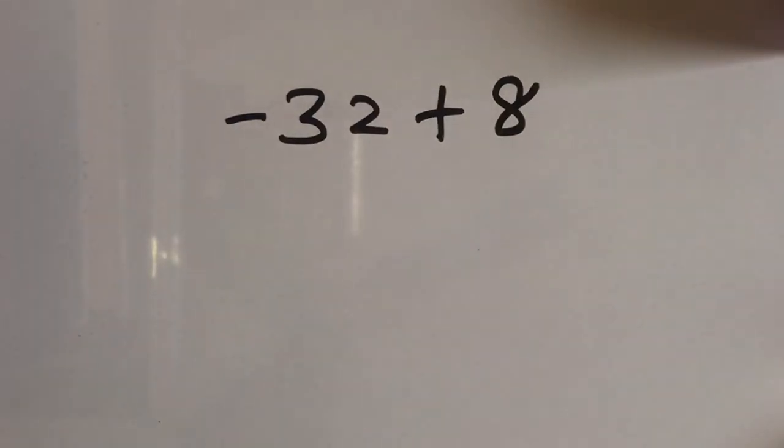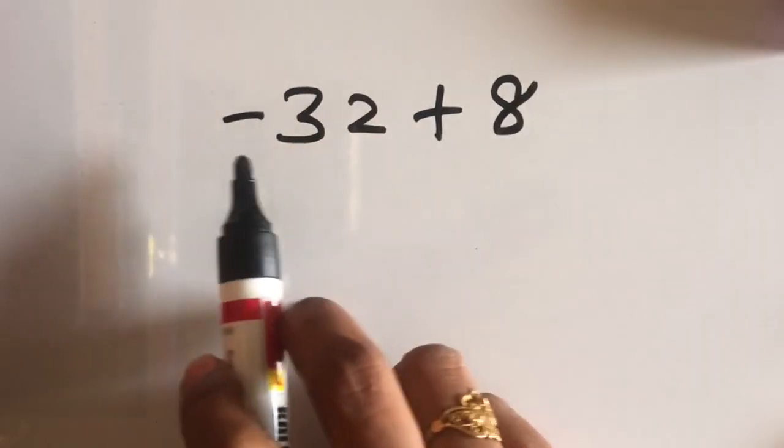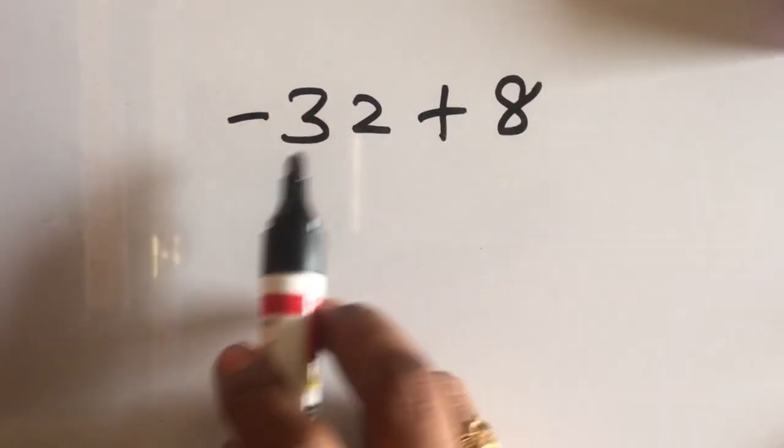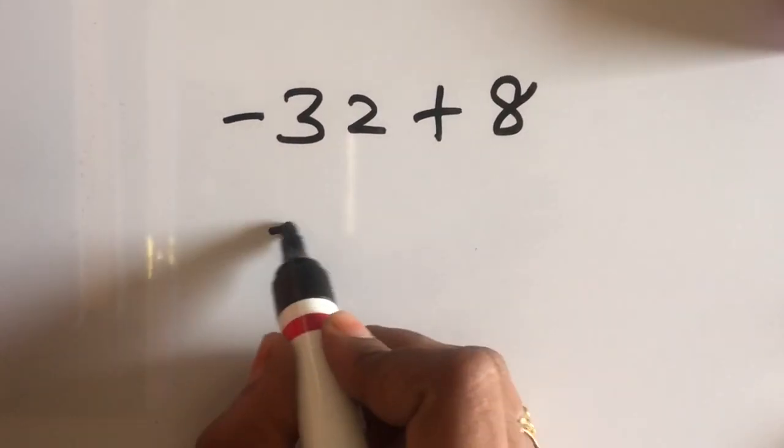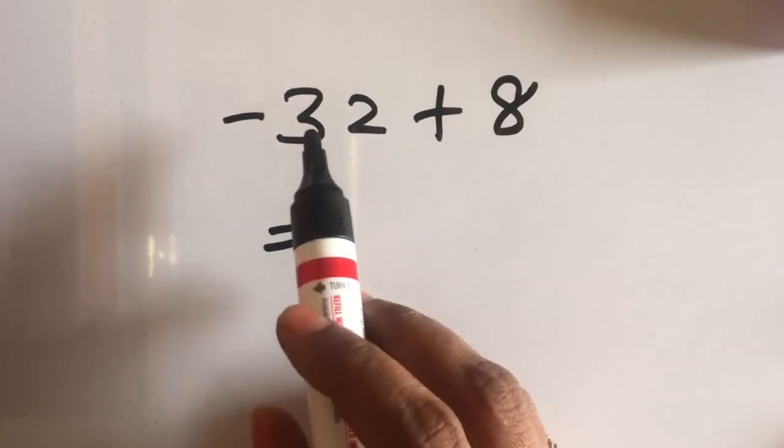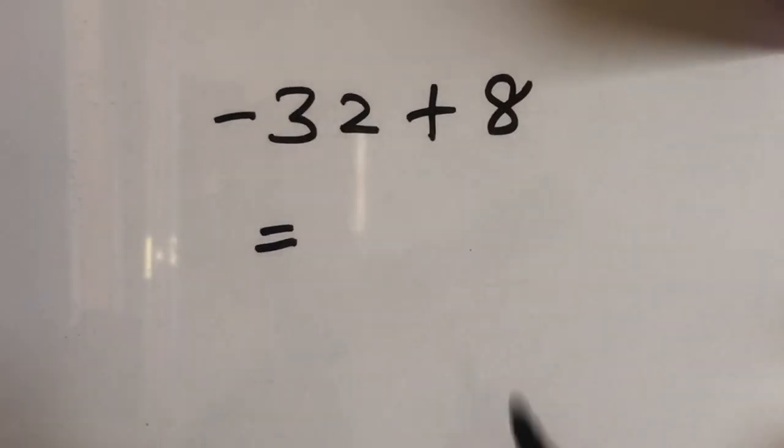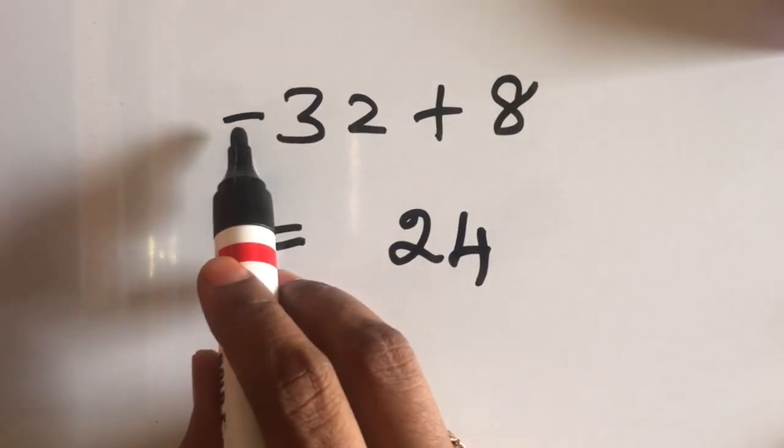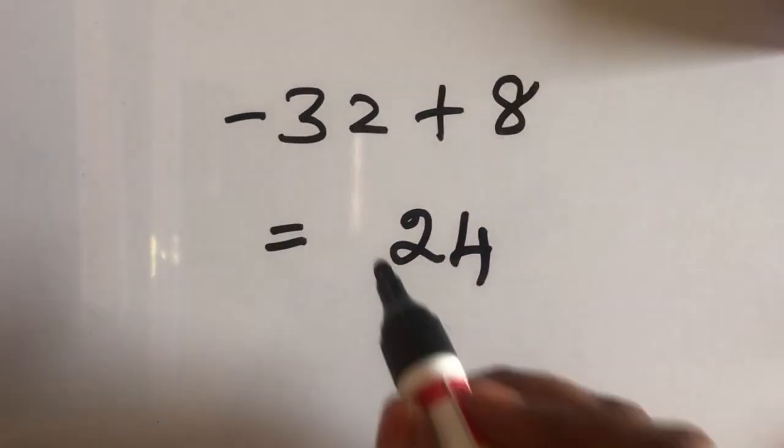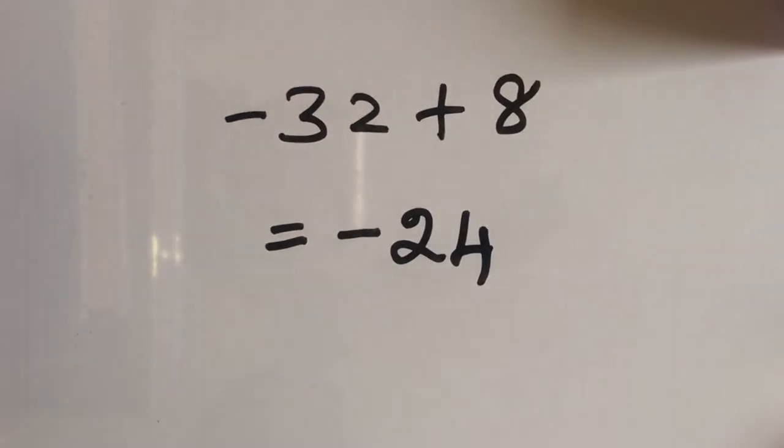It moves upward. So, both the numbers are having opposite signs. It is a negative number and it is positive number. So, we have to subtract it. While subtracting 32 and 8, we get 24. And 32 carries the negative sign. It is the greater number and it carries negative sign. So, it is minus 24.